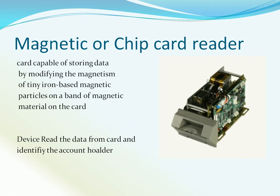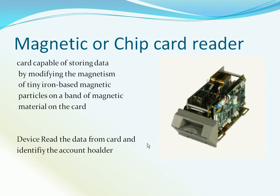In our normal life, we are dealing with bank credit cards. On the back of this card, we have a signature. From this magnetic or chip card reader, the device reads the data from the card we previously signed, then this reader identifies the account holder. There is also a unique PIN number for each account holder.